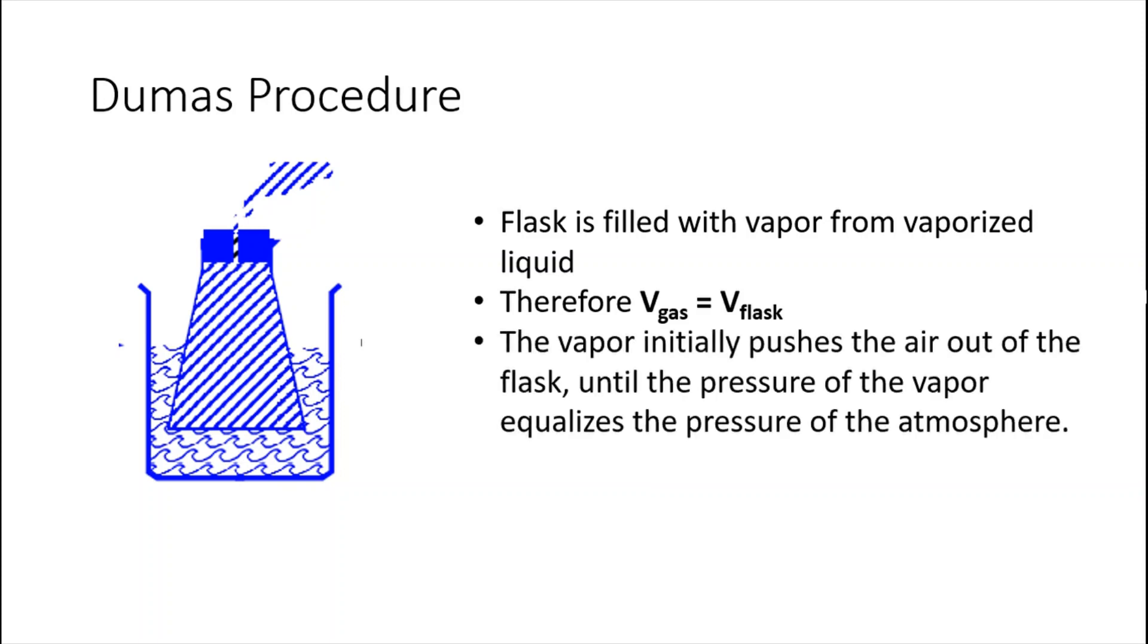When the liquid began to vaporize, it initially pushes the air out of the flask. Some of the vapor will actually escape by effusion until the pressure of the vapor inside the flask equalizes the pressure of the atmosphere on the outside. Since we can measure the pressure of the atmosphere with a barometer, at this point the pressure of the gas equals the pressure on the outside.